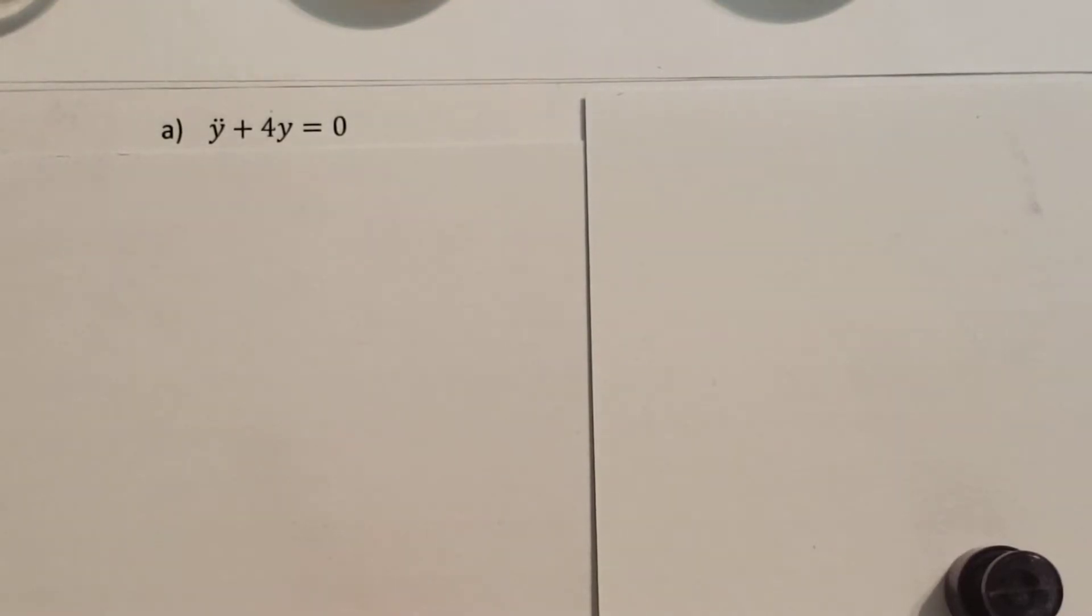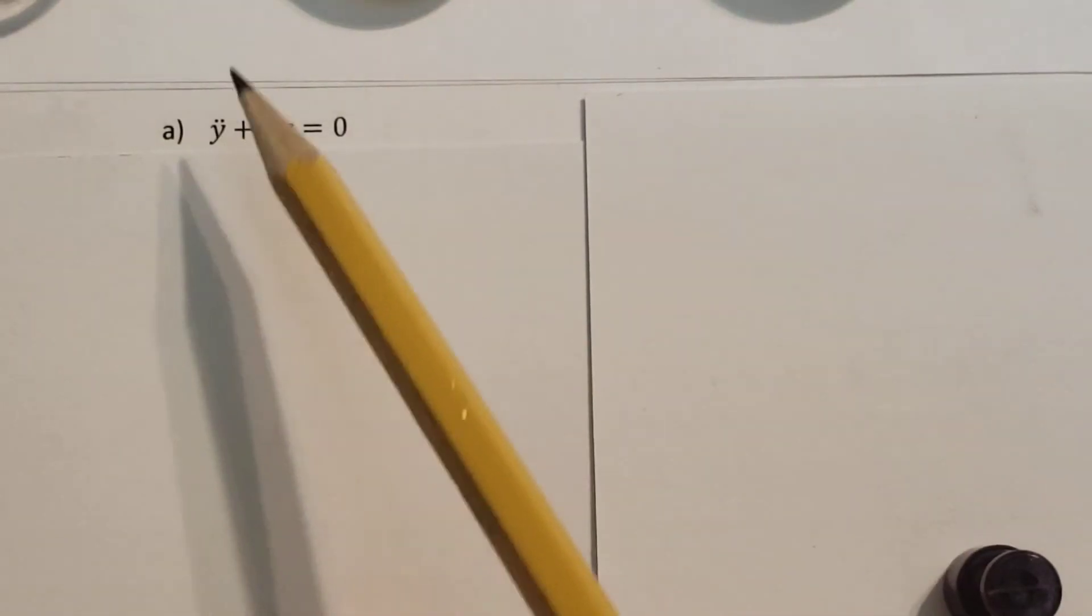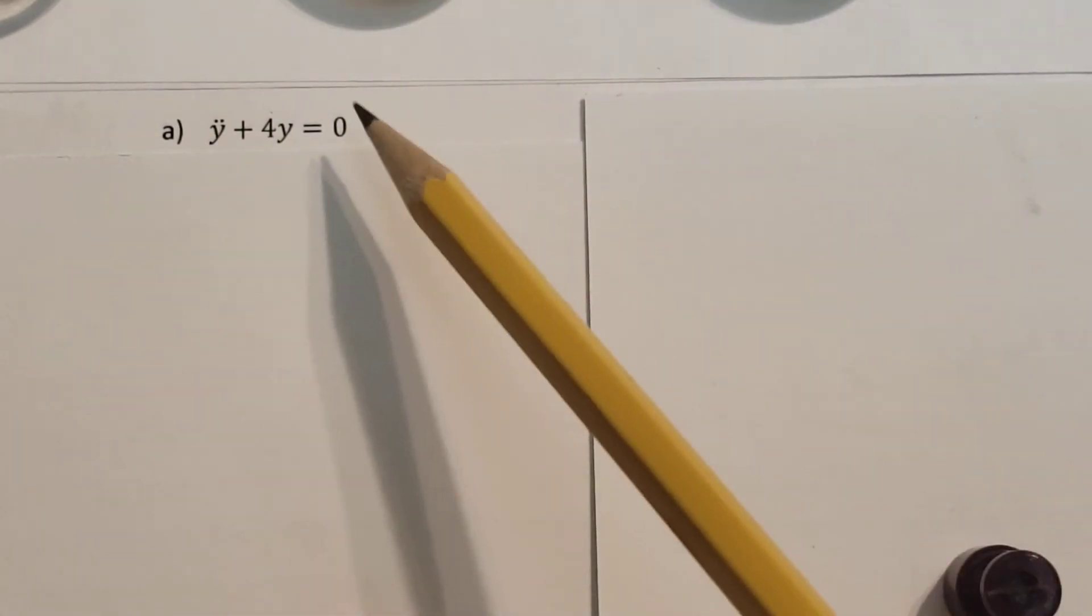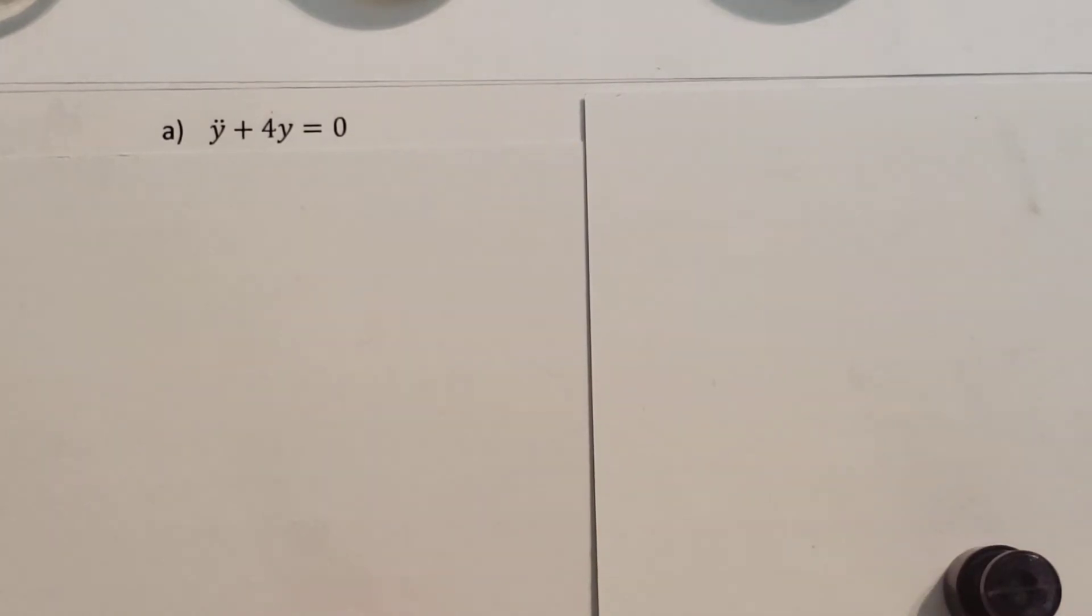All right, let's solve this differential equation. We have y' plus 4y equals 0. Now, there's nothing on the right-hand side, so that simplifies our life a lot.